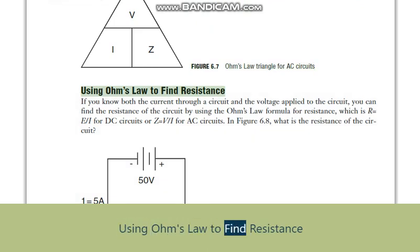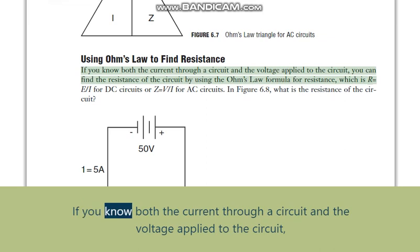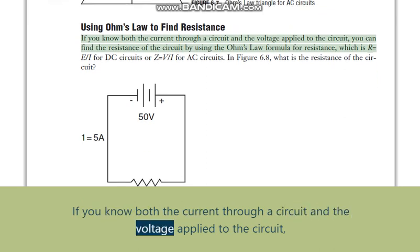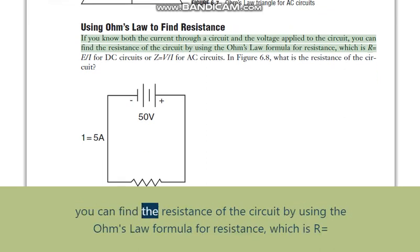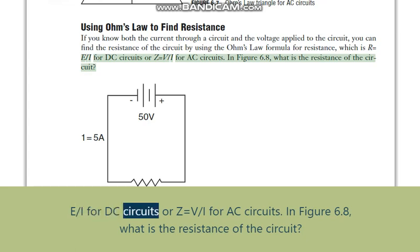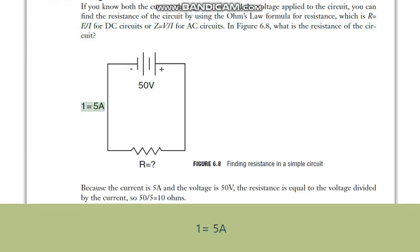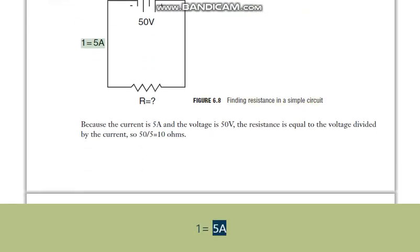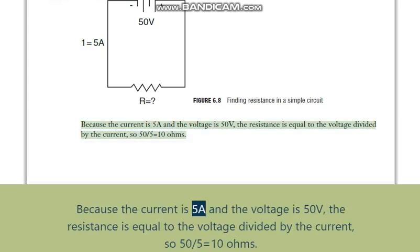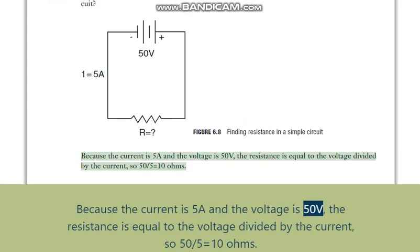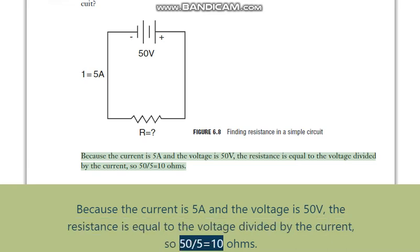Using Ohm's law to find resistance. If you know both the current through a circuit and the voltage applied to the circuit, you can find the resistance of the circuit by using the Ohm's law formula for resistance, which is R equals E slash I for DC circuits, or Z equals V slash I for AC circuits. In figure 6.8, because the current is 5A and the voltage is 50V, the resistance equals voltage divided by current: 50 divided by 5 equals 10 Ohms.